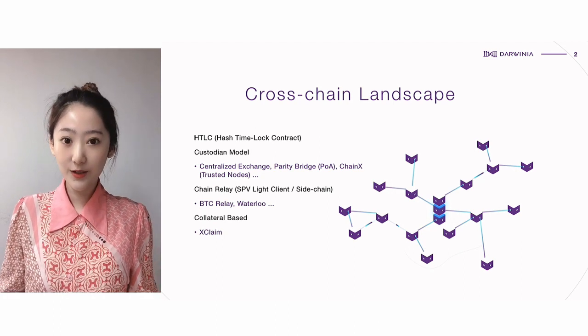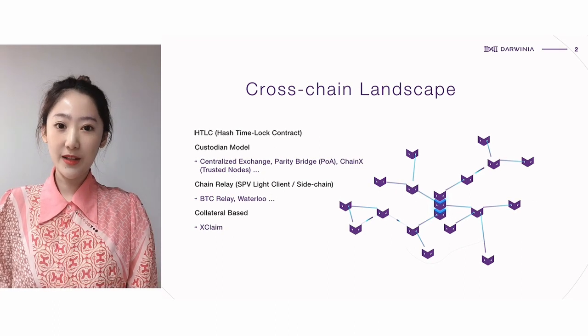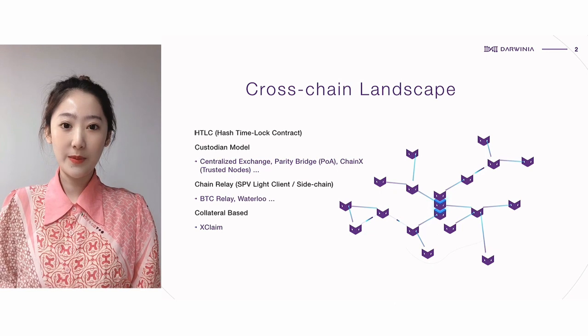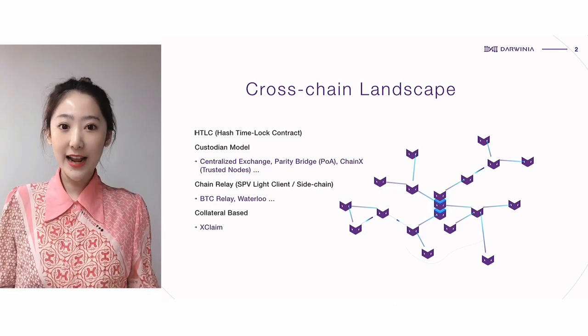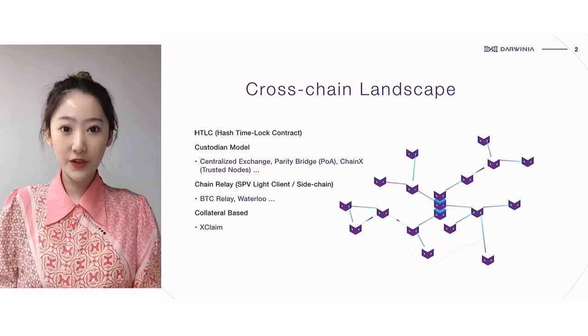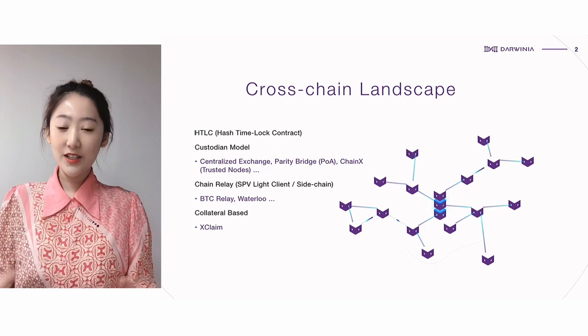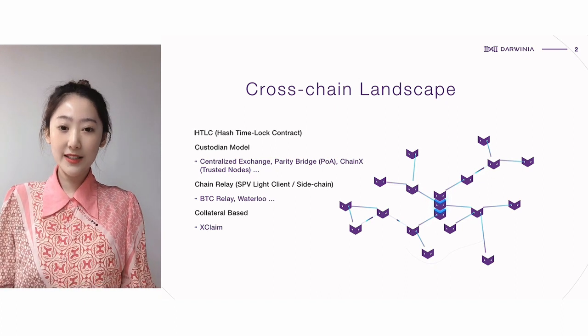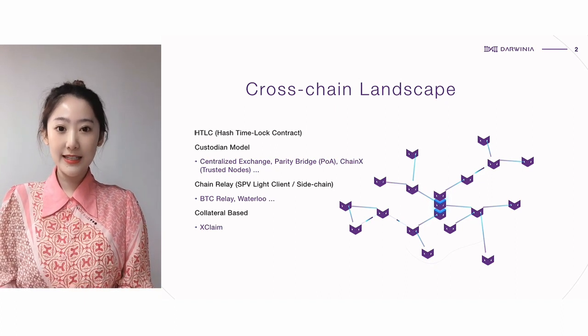Each solution has its pros and cons. Previously, hashtag lock has solved the problem of atomic swap, but it's not actually transferring assets across blockchains. It is also a very complex setup and has many other problems.